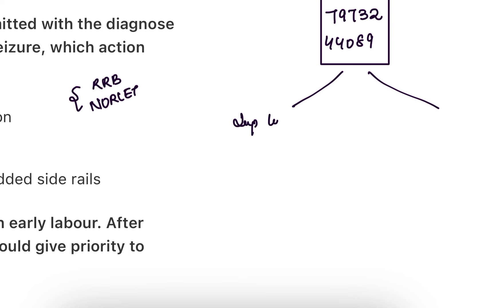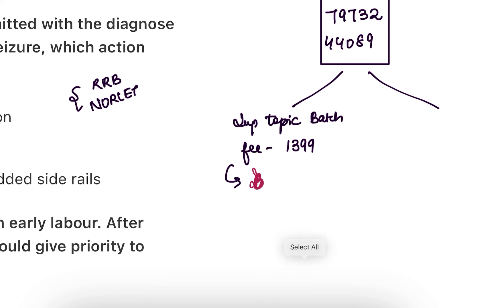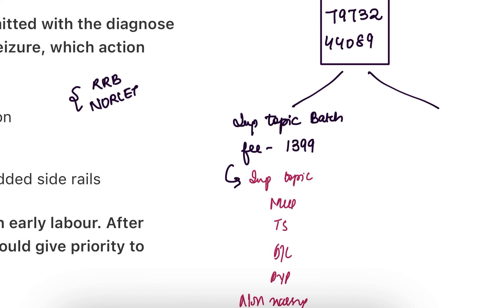One batch is the important topic batch. You still have a lot of time, so the fee is going to be 1399. Whoever is at a basic level can join this batch. We will start with important topics across all subjects — MCQ classes, test series, doubt classes, previous year papers, plus non-nursing best MCQs.